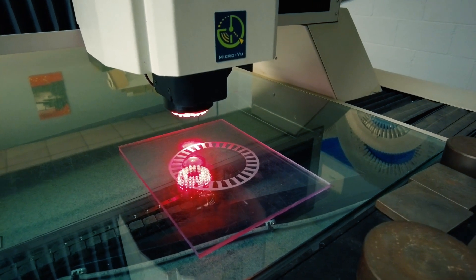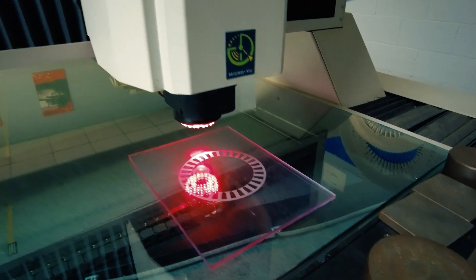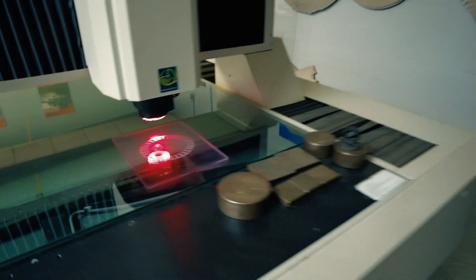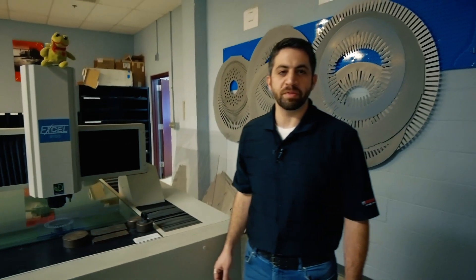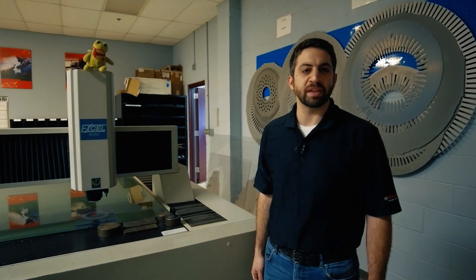Once we've established where the part is and what its orientation is, we'll let the machine run automated checking optically, checking many points that we've created in terms of all the dimensions on the print as well as any other dimensions we'd like to check.